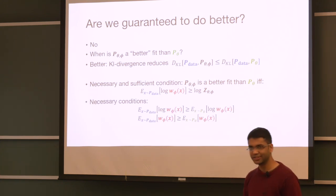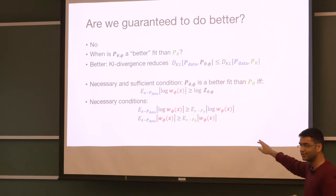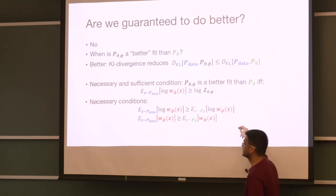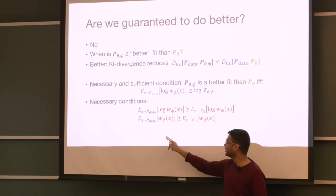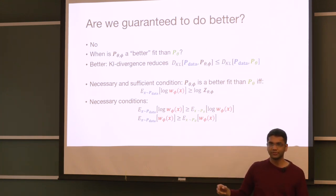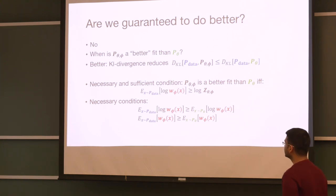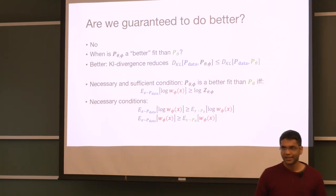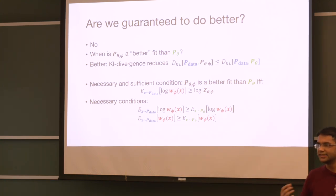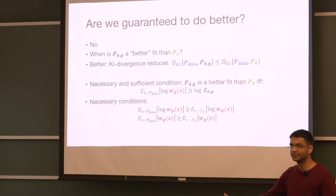So we can instead derive weaker conditions which are necessary or insufficient but can be easily checked in practice. These are two necessary conditions which check the expected log weights and the weights under the data distribution and the model distribution. If these conditions are satisfied, one can hope that any importance weight estimator W will actually improve your model fit. These conditions go to the heart of what it means to boost a base model P-theta with an importance weight estimator W.